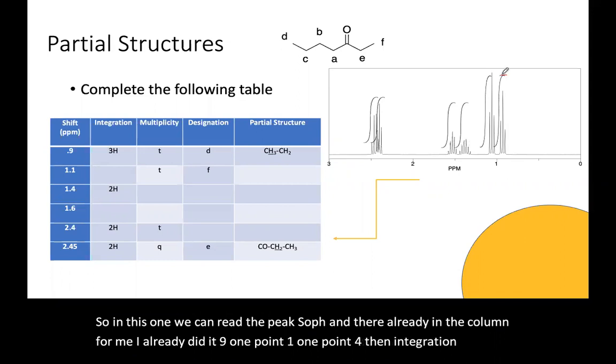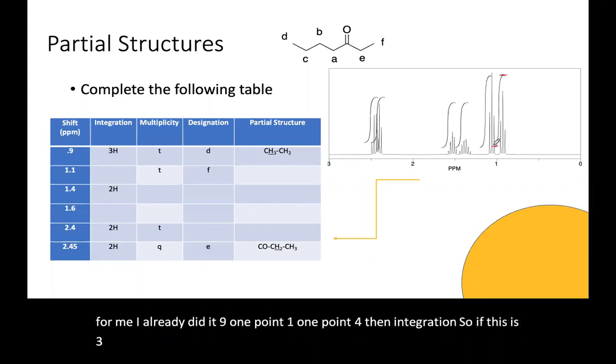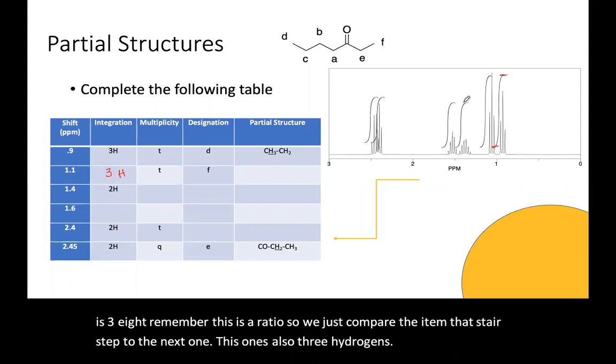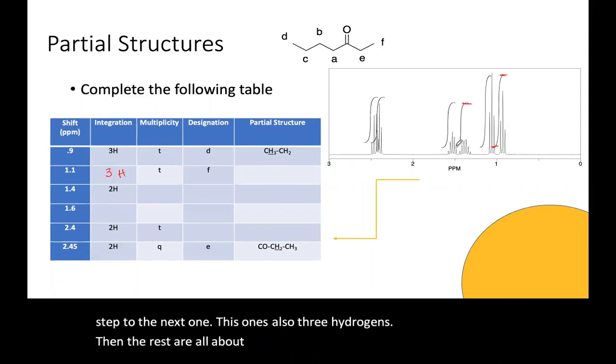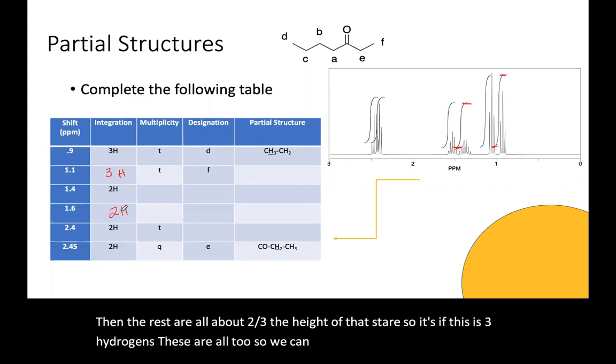So if this is 3H, remember this is a ratio. So we just compare the height of that stair step to the next one. This one's also three hydrogens. Then the rest are all about two thirds, the height of that stair. So it's probably, if this is three hydrogens, these are all two. So we can just fill in the rest at two and they're already partially done.